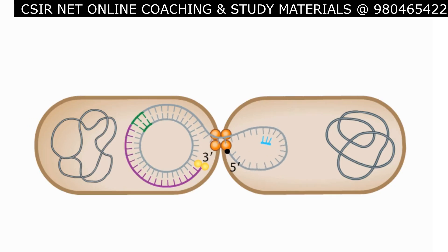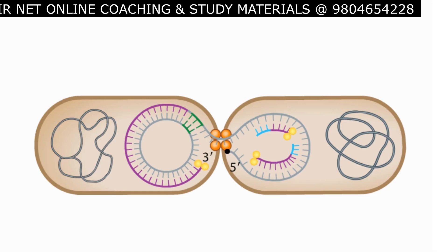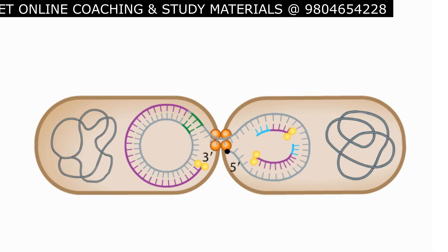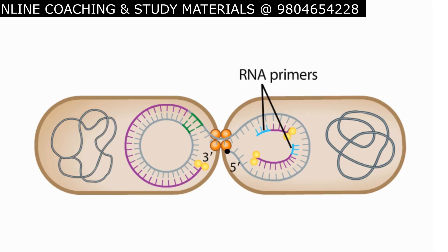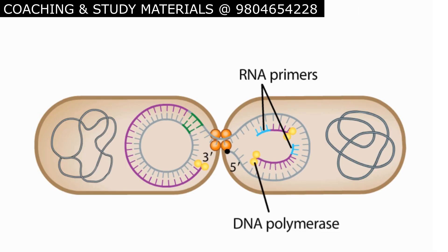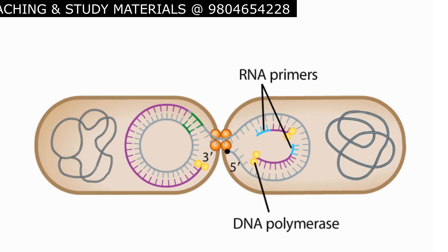In the recipient, the second strand is formed by lagging strand DNA synthesis, which requires a synthesis of RNA primers that DNA polymerase can use as starting points. The RNA primers are later replaced by DNA.